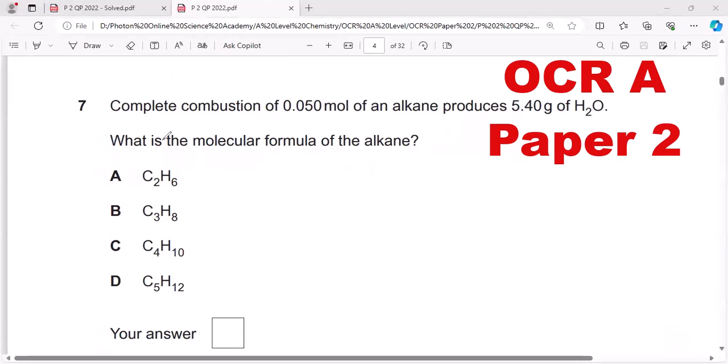Hello everyone, you are watching my YouTube channel Chemistry by Sadhana. This is an OCR A-level past paper question. Let's try to conquer this question by making it easy. You can see the statement of the question: complete combustion of 0.050 mol of alkane produces 5.40 grams of water.